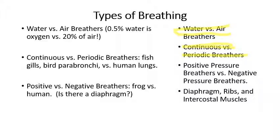We'll talk about continuous breathers versus periodic breathers, and also positive pressure breathers versus negative pressure breathers. A positive pressure breather is an animal that gulps air into its lungs and pushes air in using muscles. As opposed to negative pressure breathers, which expand the lungs to a larger volume — stretching them — which suddenly lowers the air pressure inside the lungs, sucking air in. You increase the size of the lungs to suck air in, then blow air back out by decreasing the size of the lungs.